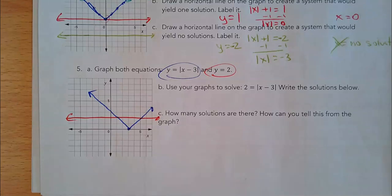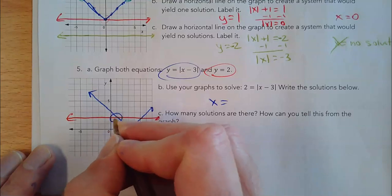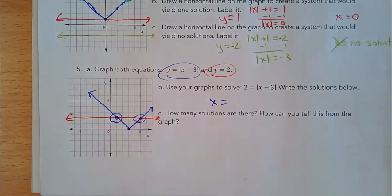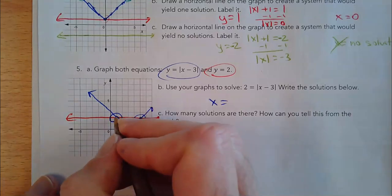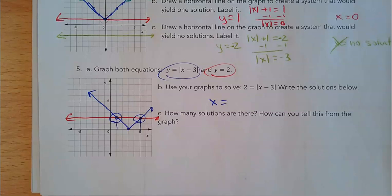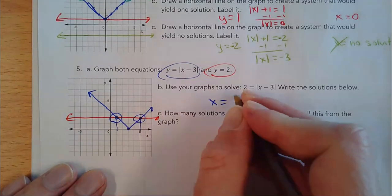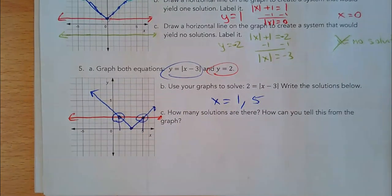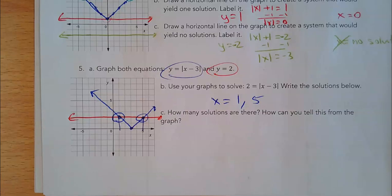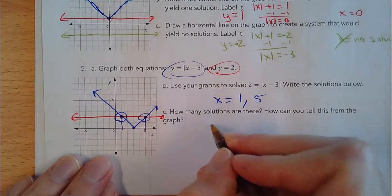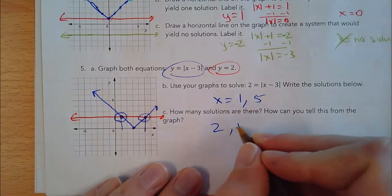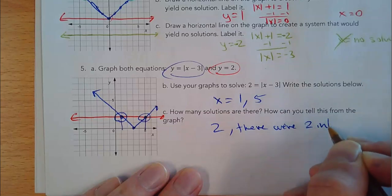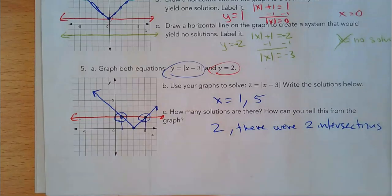What are the solutions? I'm looking for the intersections. The two graphs intersect at x equals 1 and x equals 5. When x is 1, they both have a y-value of 2. When x is 5, they both have a y-value of 3. That means they meet each other at those points — so there are two solutions.